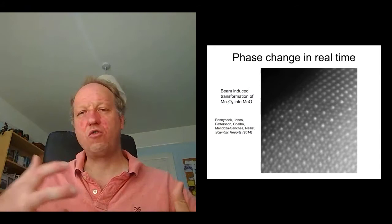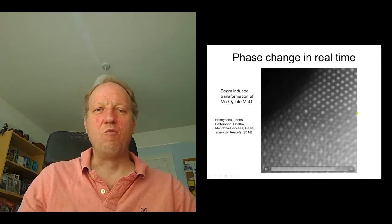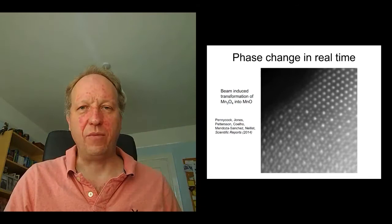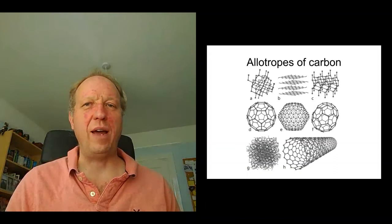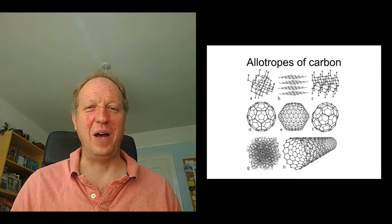changing from one structure into another real time inside the microscope. We can watch these changes occurring and watch where the atoms are going, which is very exciting. Moving on to a different problem, allotropes of carbon. These are all allotropes of carbon, different structures of carbon. And again, in the Q and A session, I might ask you what you think they all are. This one down here, I'll tell you, this is a carbon nanotube,